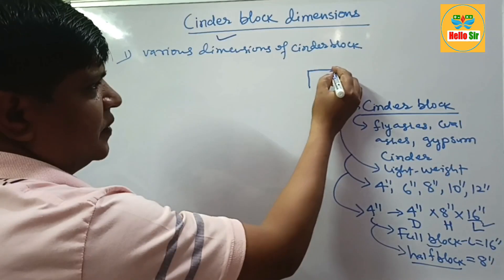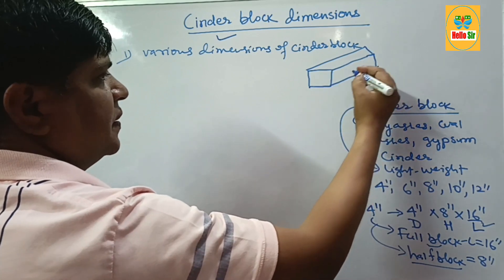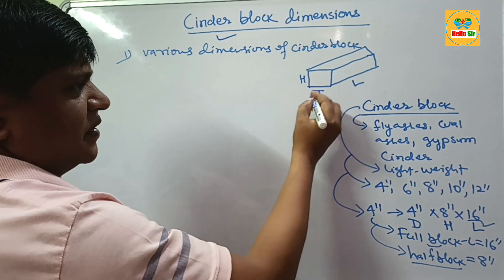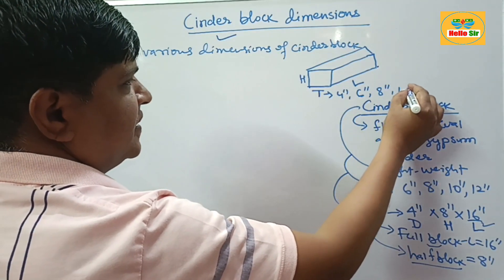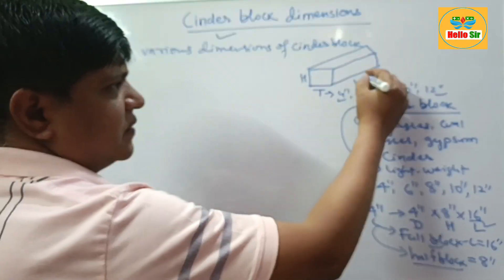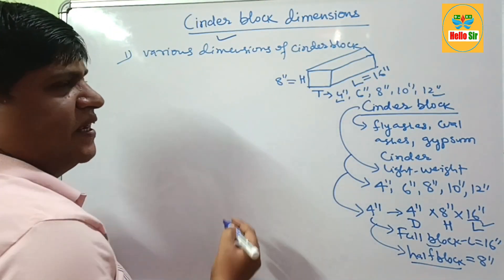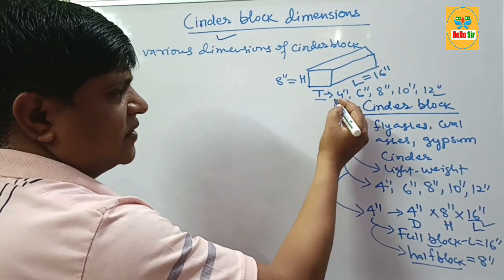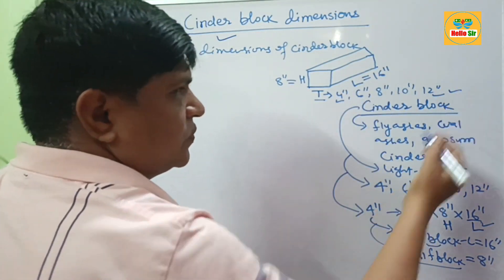Mostly, a Cinder Block has a cubical structure. The length, thickness, and height are its three dimensions. The thickness can be 4-inch, 6-inch, 8-inch, 10-inch, or 12-inch — it can vary from 4 to 12 inches. But the length of a Cinder Block is always 16-inches, and the height is always 8-inches. So the two dimensions — length and height — remain constant, while the thickness, also called depth or width, can vary between 4 and 12 inches.